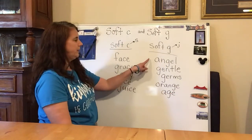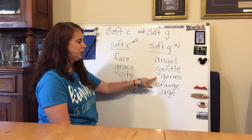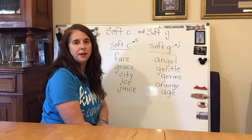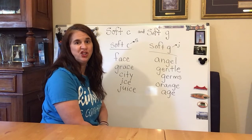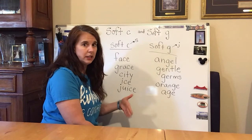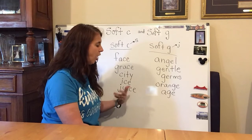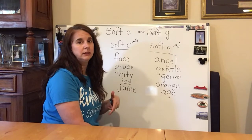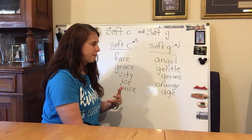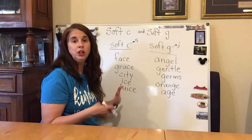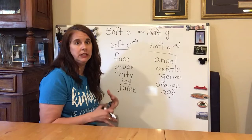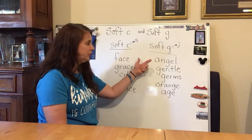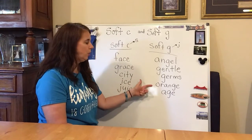So here again we have: angel, gentle, germs, orange, age. That soft G makes the J sound. The hard G, by contrast, makes the sound like 'guh' — like gum, game, goat. That's the hard G sound. But the soft G sound makes J: angel, gentle, germs, orange, age.